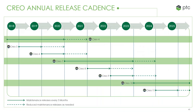That's really it for the major improvements I wanted to highlight, though there are many minor improvements I don't have time to cover. Looking at a high-level overview of the roadmap going forward: we've moved to yearly releases of Creo, with a major release coming out every three years — starting with Creo 4.0 and the next major release being Creo 7.0.